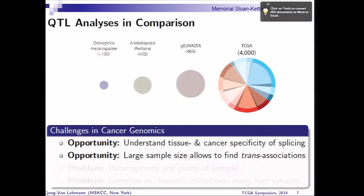Let me go to the next goal, which is trying to take a statistical genetics view on finding variants associated with alternative splicing. On the left you can see what people have done so far in the statistical genetics field doing QTL analysis on next-generation sequencing data, with GEUVADIS as one of the most recent ones. Looking on the right, different colors represent the heterogeneity across the different cancer types, but you have quite a large data set available to do this type of analysis. It is perfectly suited to understand tissue and cancer specificity of splicing, as well as finding trans associations, which has been very limitedly possible due to the lack of power in previous projects.